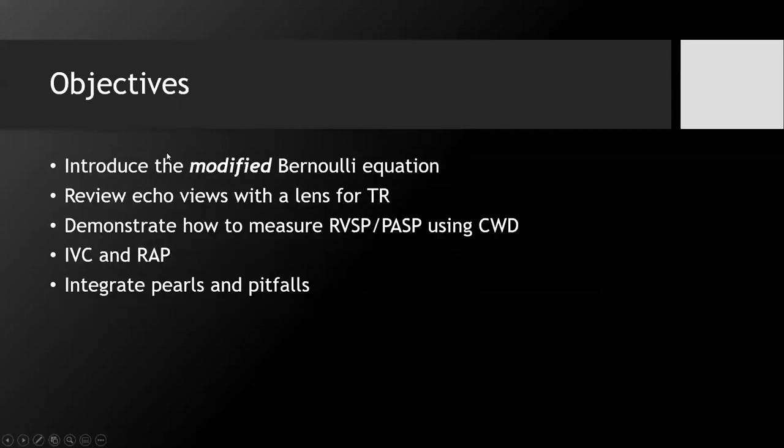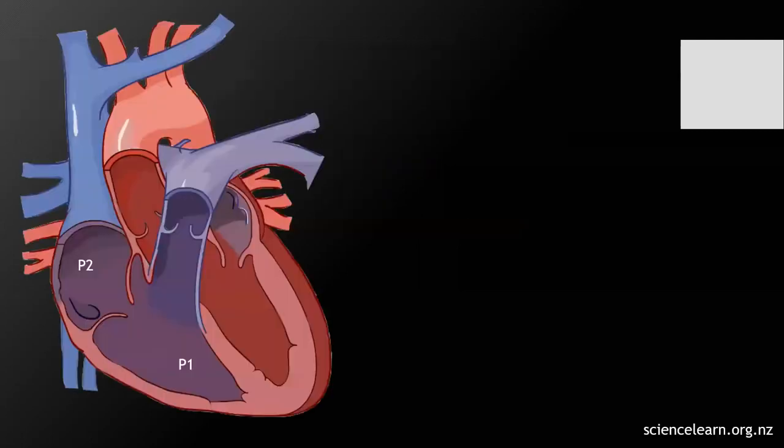Our objectives for today are: to introduce the modified Bernoulli equation, which is the only piece of math you need to understand what we're doing with echo when measuring RVSP; to review echo views with a lens for TR, including introducing the RV inflow view; to demonstrate how to actually measure the RVSP or PASP; to briefly touch on the IVC and right atrial pressure; and throughout, we'll integrate pearls and pitfalls to the whole process.